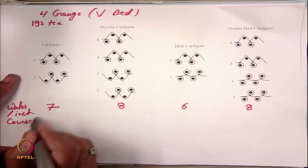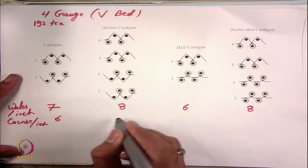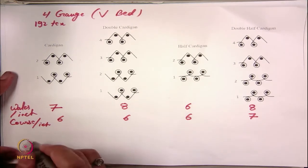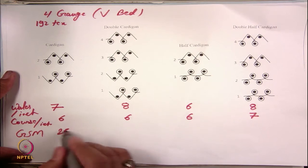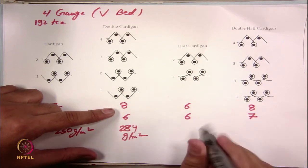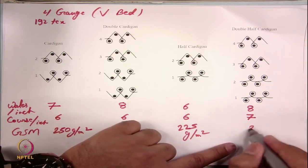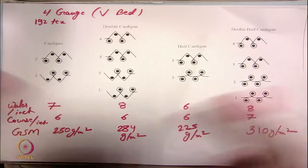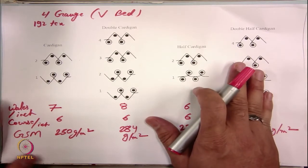Courses per inch was 6 for cardigan, 6 for double cardigan, 6 for half cardigan, and 7 for double half cardigan. Looking at the GSM of the fabric: cardigan was 250 g/m², double cardigan was 284 g/m², half cardigan was 225 g/m², and double half cardigan was 310 g/m². This is what was observed after analysis of these fabrics.